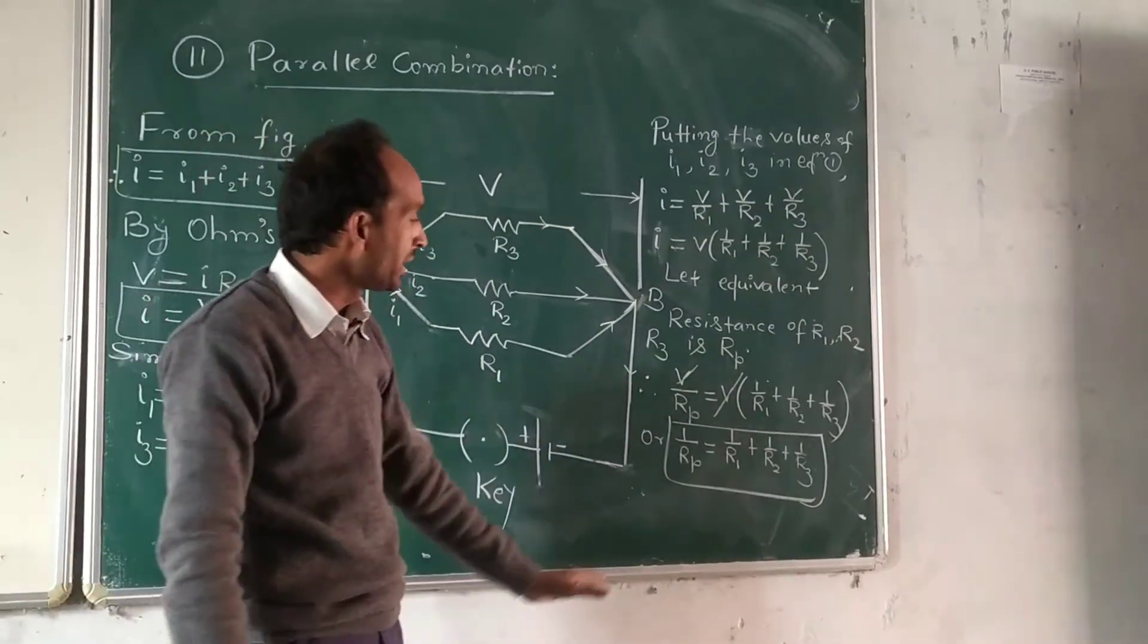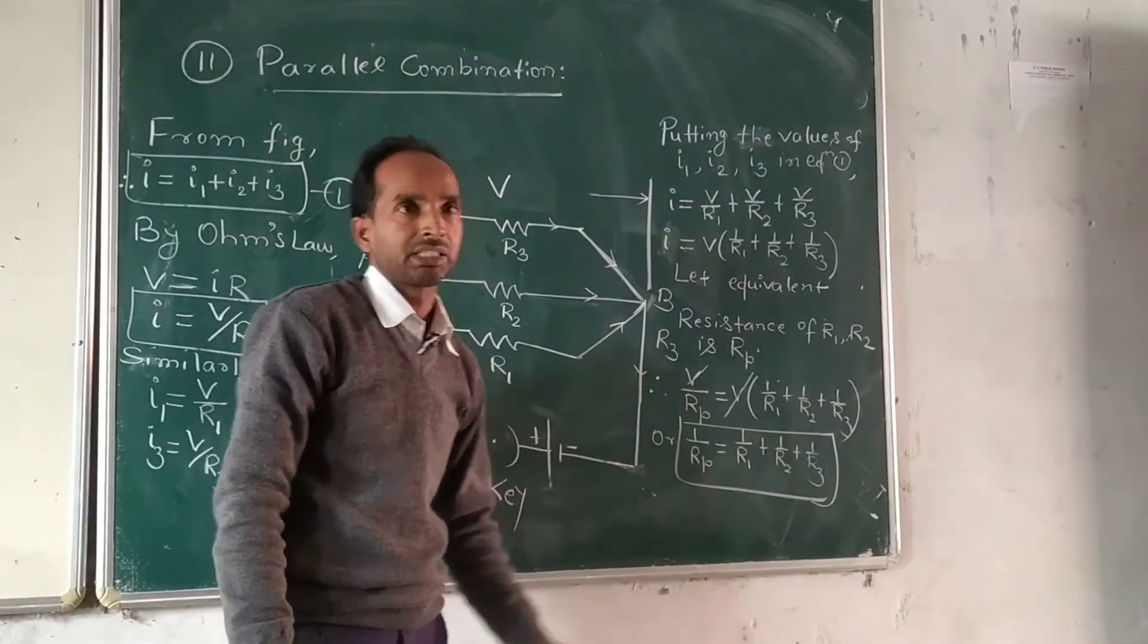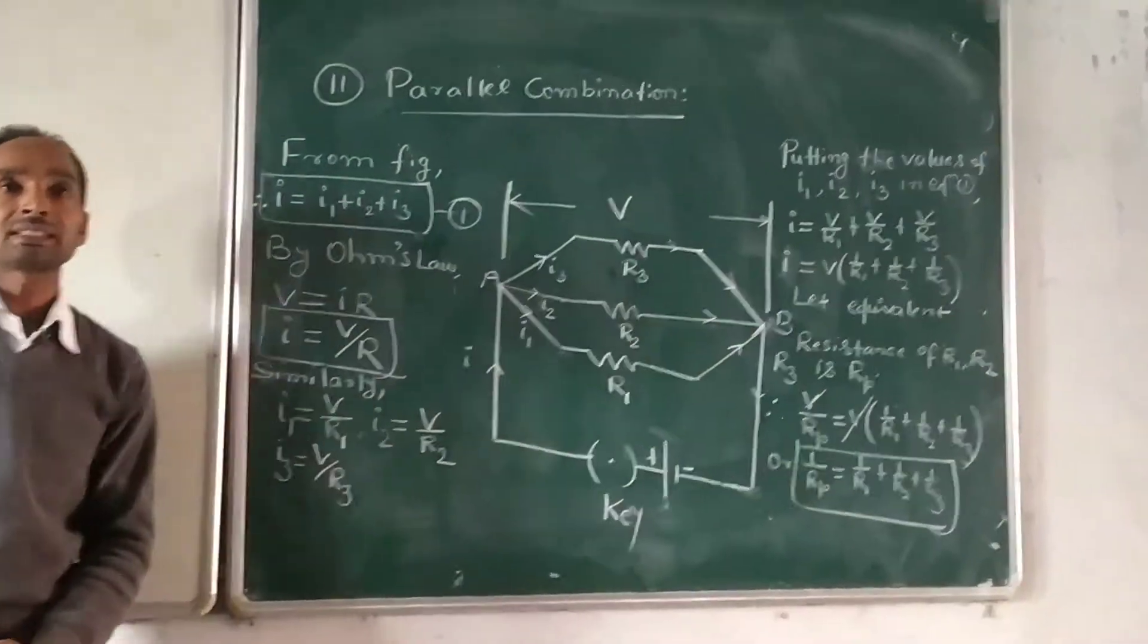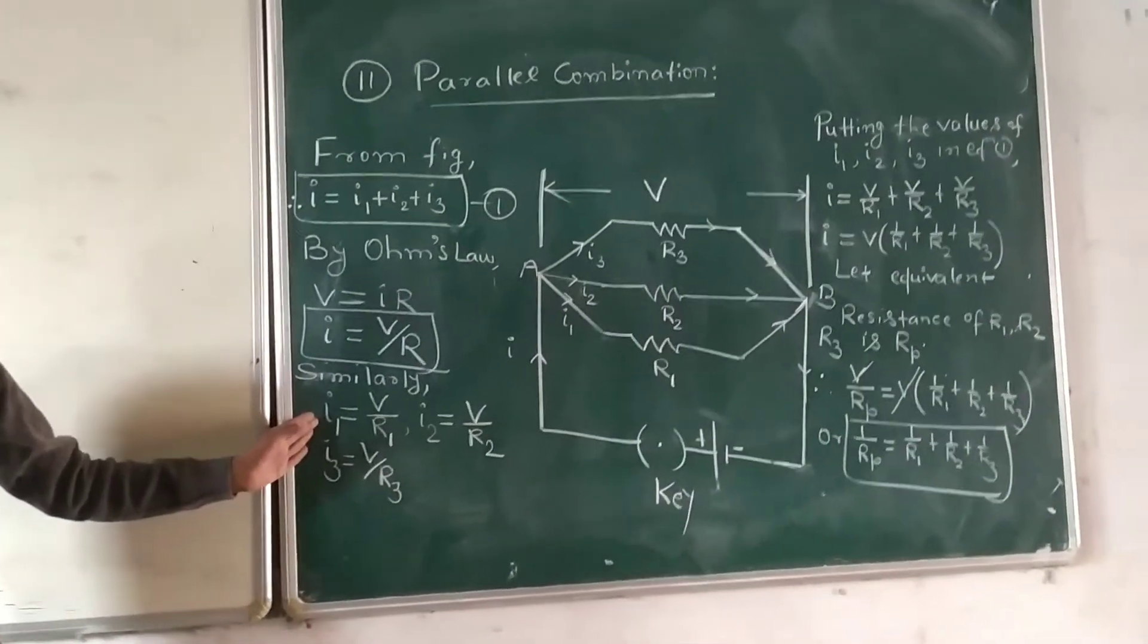Here, Rp is the equivalent resistance which will always be less than the lowest value of R1, R2 and R3.